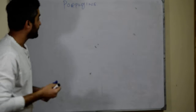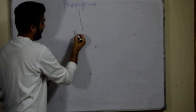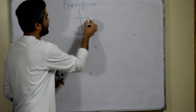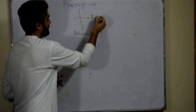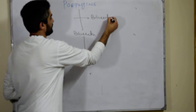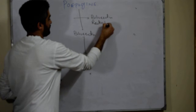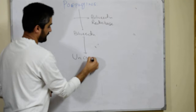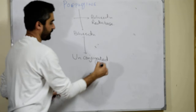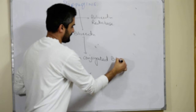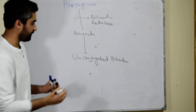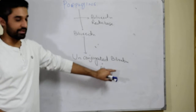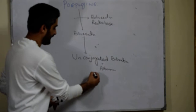These porphyrin molecules are converted into biliverdin, and then this biliverdin is converted into unconjugated bilirubin. The enzyme used here is biliverdin reductase. This unconjugated bilirubin combines itself with a protein called albumin and is carried to the liver.